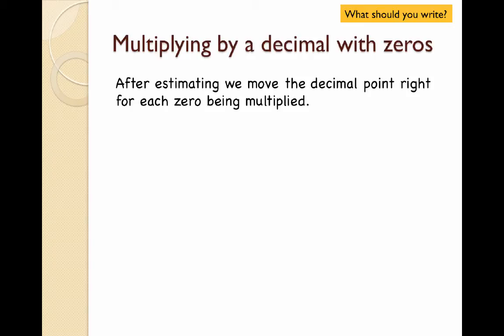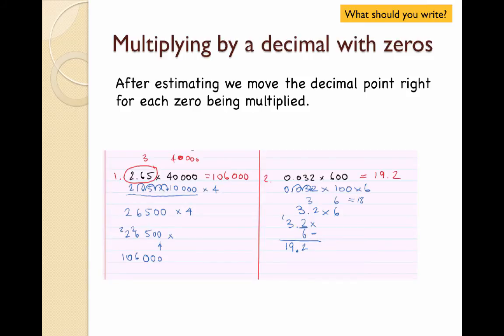After estimating, we move the decimal point right for each zero being multiplied. Then getting down the two examples with the working out is going to be a good idea and something good for you to practice with when you're trying it yourself.